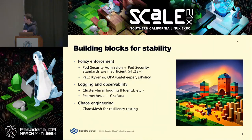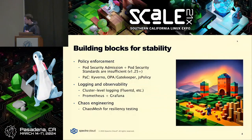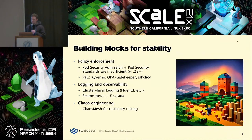I'd recommend Kyverno if you aren't already using Rego (which is what OPA uses). Kyverno is the most Kubernetes-native option — it's not quite as mature as OPA but doesn't require using Rego. These tools allow you to define very granular access control policies via webhooks, much more granular than pod security standards.